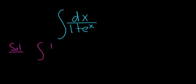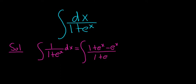So we write it as 1 over 1 plus e to the x dx. And the idea is as follows. What you do is you add e to the x to the top, and then you take it away. And on the bottom, you still have 1 plus e to the x dx.